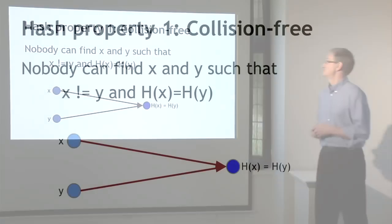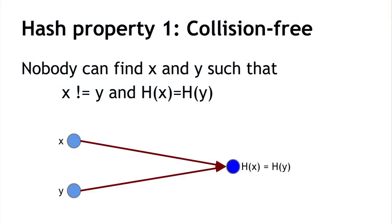The first property is collision-free. A hash function is collision-free if nobody can find values x and y such that x and y are different, and yet the hash of x equals the hash of y. Now, I said 'nobody can find' — I didn't say there is no collision. Because if you think about it, there has to be a collision. Collisions do exist.